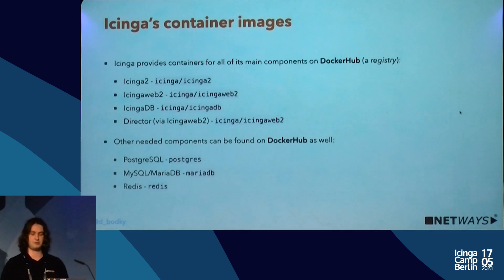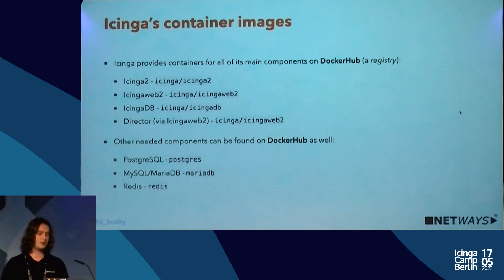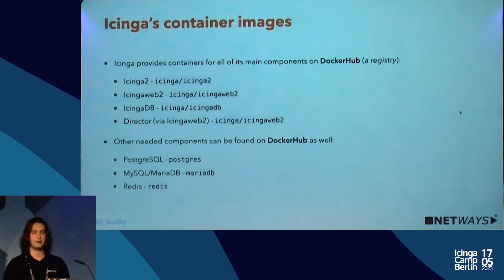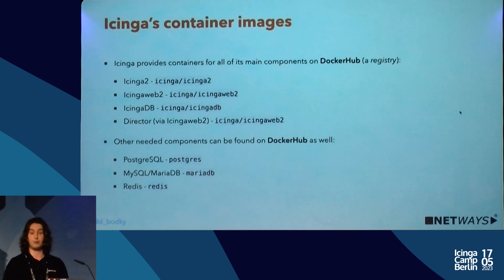The images are publicly available and contain fully functional Icinga components. Docker Hub also provides all the other tooling we need: PostgreSQL, MySQL, MariaDB, and Redis are all available, so our whole stack could be containerized if we want to go that extra mile. The Icinga 2 image runs on basically any mainstream architecture — ARM and AMD64 — and is configurable as a master, satellite, or agent instance.